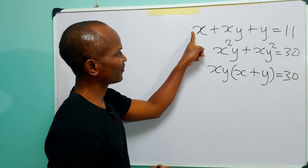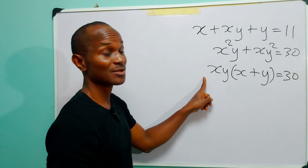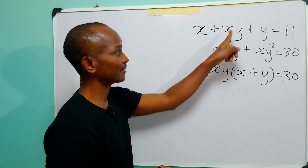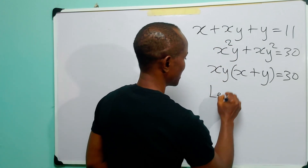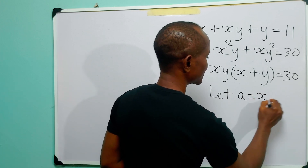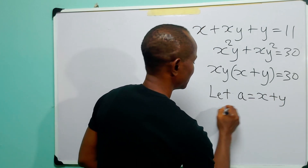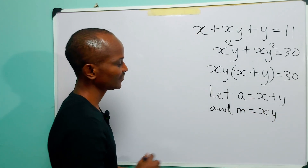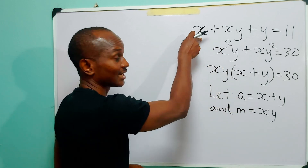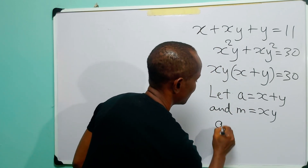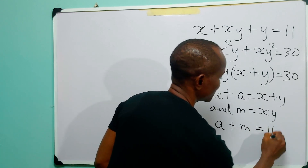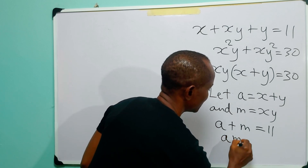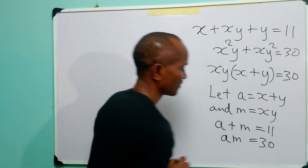Now observe the first equation and the third equation — you will see some similarities. You'll see x plus y, x plus y; you'll see xy, xy. So let a be equal to x plus y and m be equal to xy. With this we can write the first equation as a plus m is equal to 11, and we can write the third equation as a times m is equal to 30.